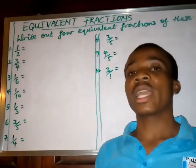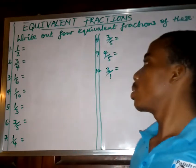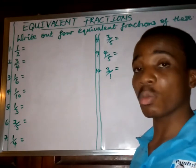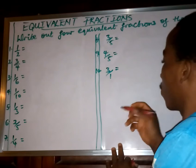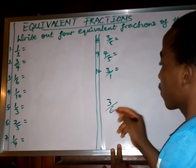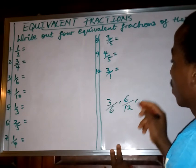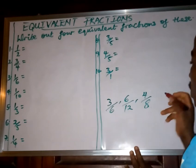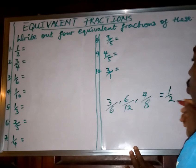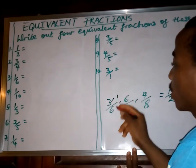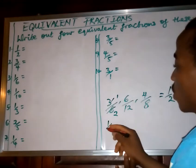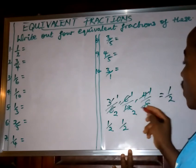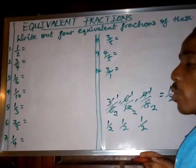In this lesson we're going to focus on equivalent fractions. Equivalent fractions are simply fractions that give us a particular value when they are divided. For instance, 3 over 6, 6 over 12, and 4 over 8 are equivalent fractions because when you divide them they all give the same value: 1 over 2. 3 in 6 is 2, that's 1 over 2. 6 in 12 is 2, that's 1 over 2. 4 in 8 is 2, that's still 1 over 2.